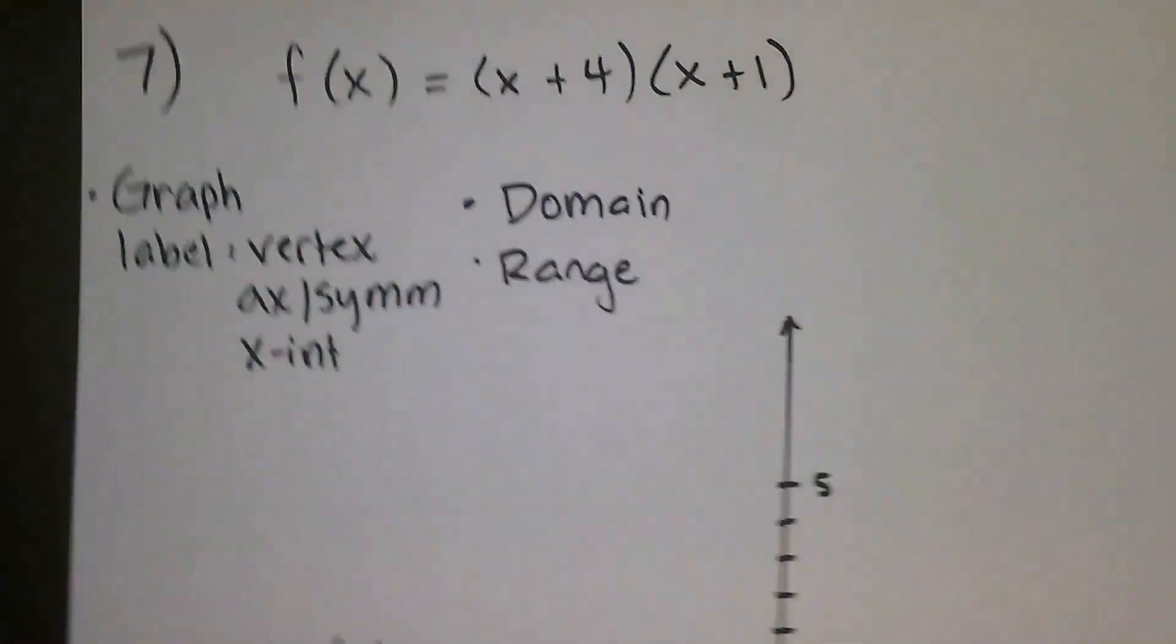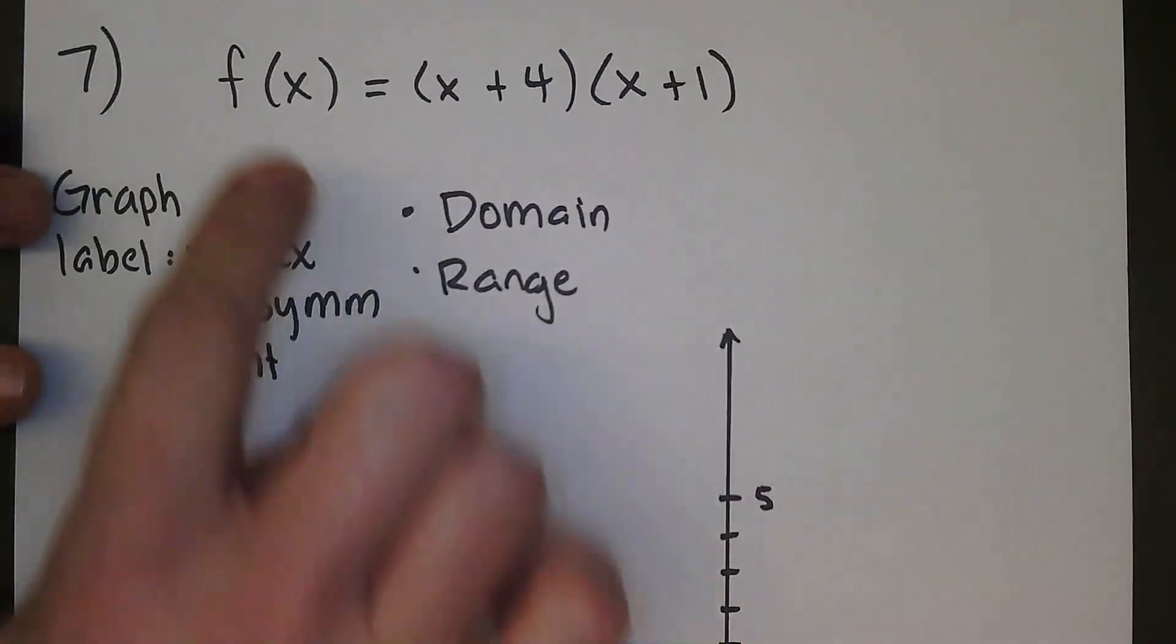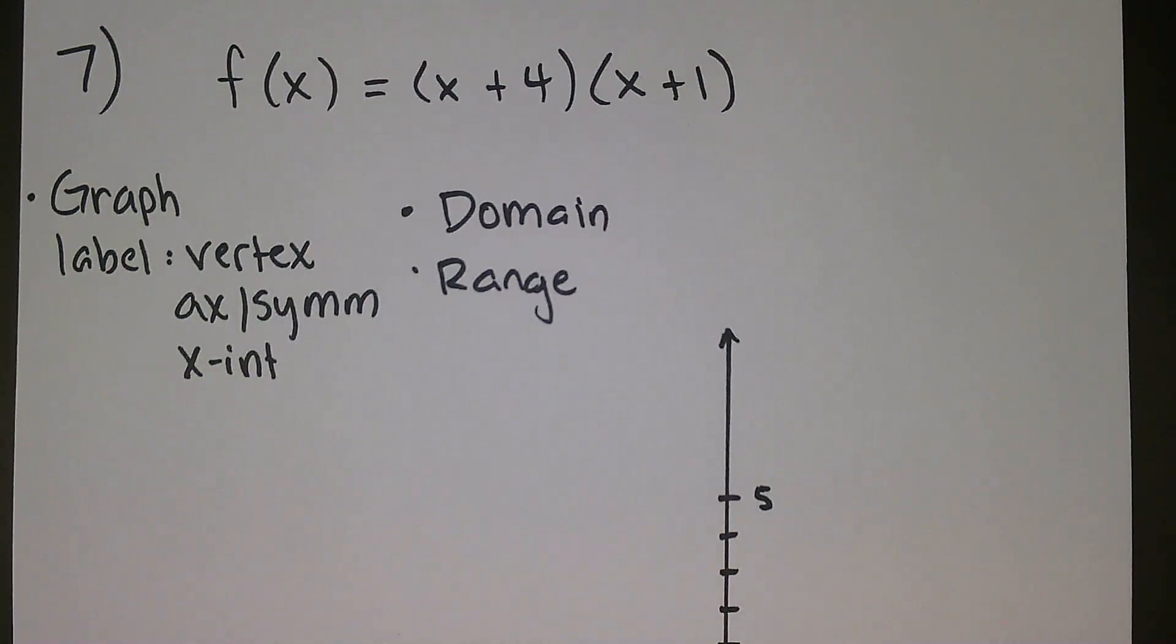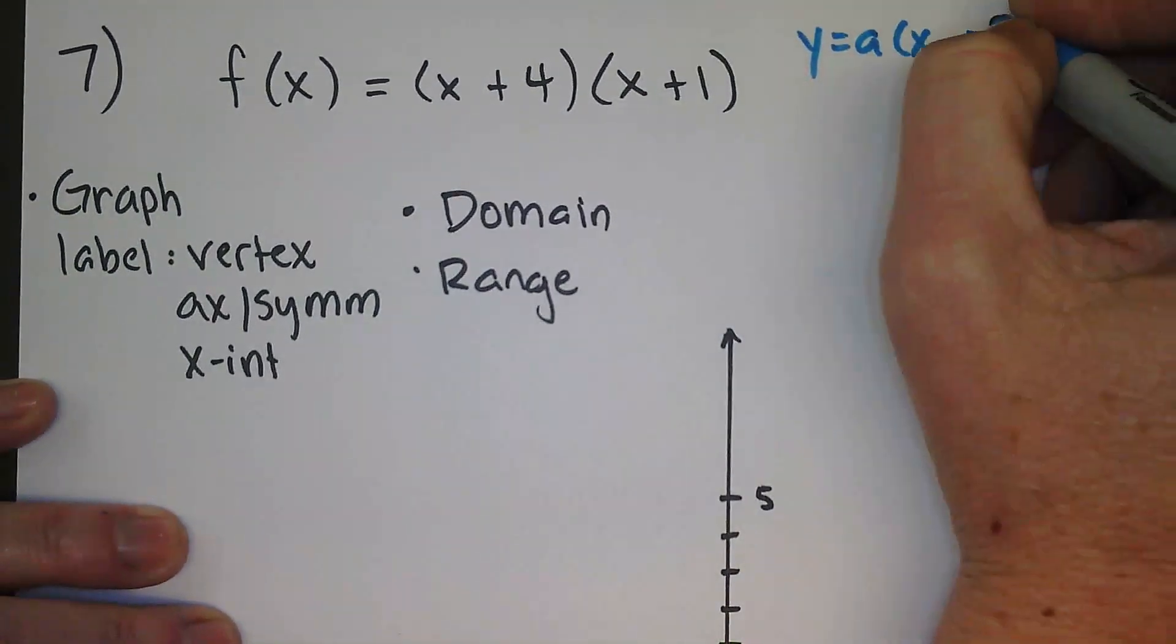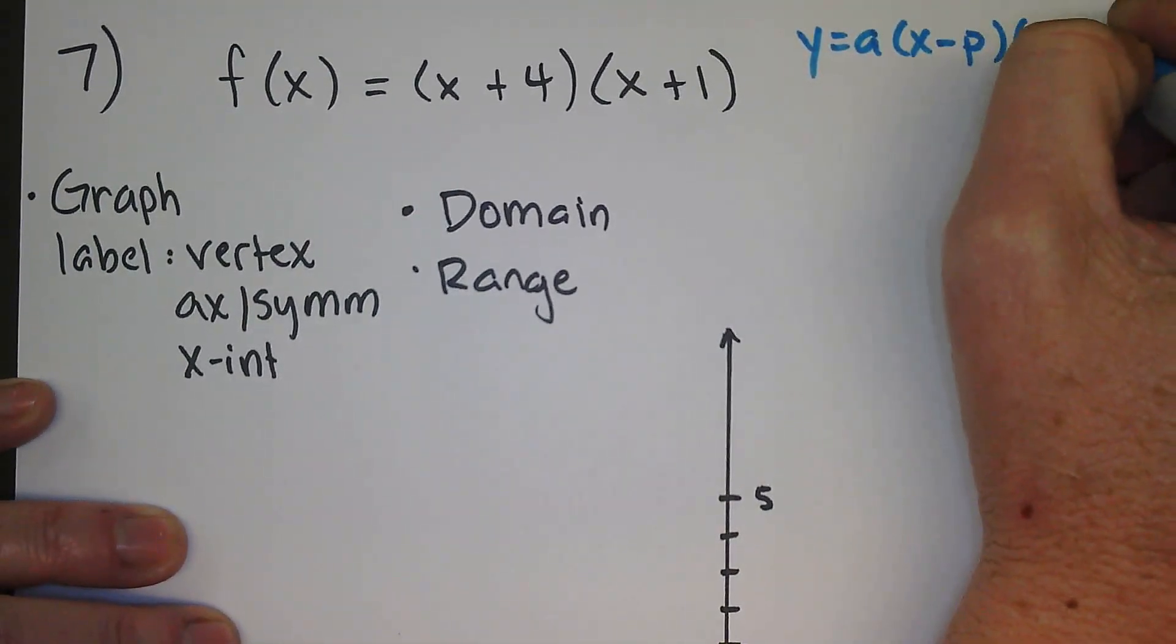So I'm going to zoom out a little bit here so we can see it better. Perfect. So this is the function. It is in factored form or intercept form, which is basically y equals a times x minus p and x minus q.